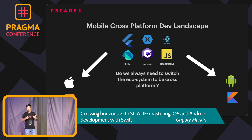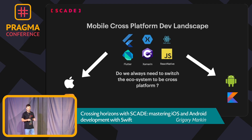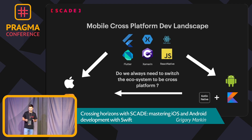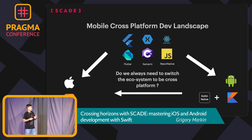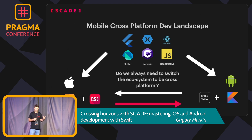So we asked ourselves: do we always need to leave the ecosystem of the mobile platform in order to be cross-platform? If you look into the details, you'll see one possible solution. The guys from JetBrains had the same thoughts and created Kotlin Native — they decided: if I'm already on Android, maybe I can go to iOS without switching the ecosystem completely. At Skate, we're doing it the other way around: we are working on bringing Swift to Android so that Swift developers can create applications for Android as well.